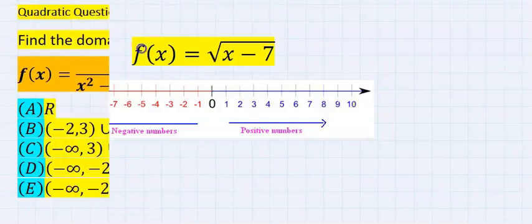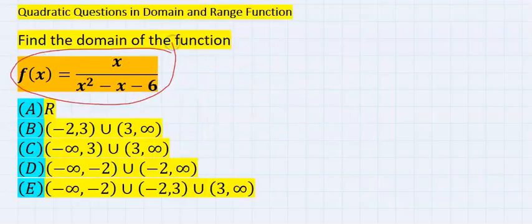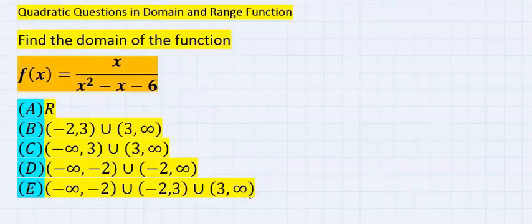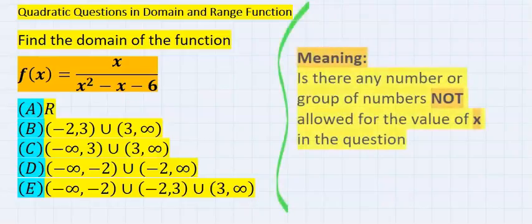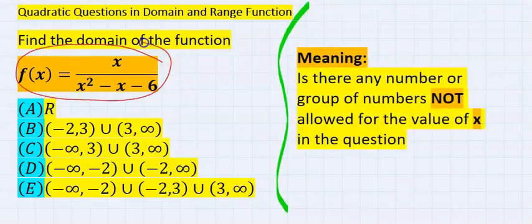When you have solved this problem, then you are going to choose one of the options. The first thing you are going to realize is that you are asked to find the domain of this function. However, what does this mean? This literally means that there is a part of this function that is going to cause problem for us.